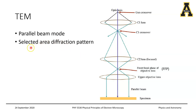A parallel beam of electrons is very important if you are trying to look at what is called a selected area diffraction pattern, also called SAD. What you need to retain right now is that you need to use the electron microscope in the parallel beam mode in order to do SAD measurements.